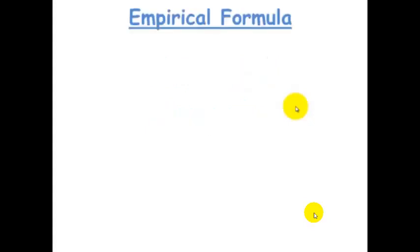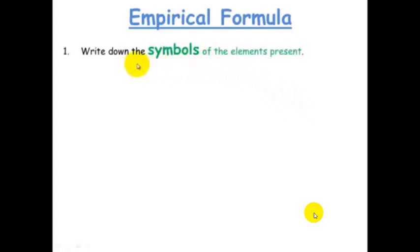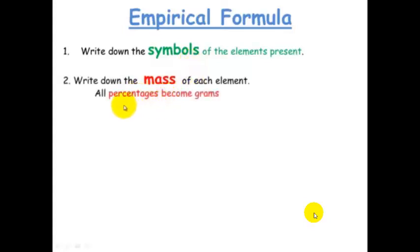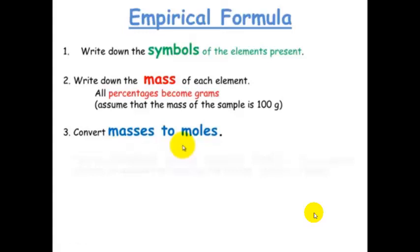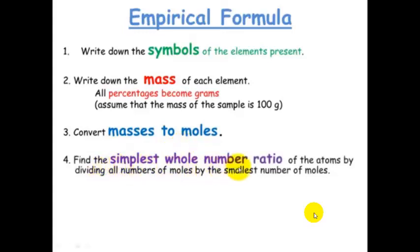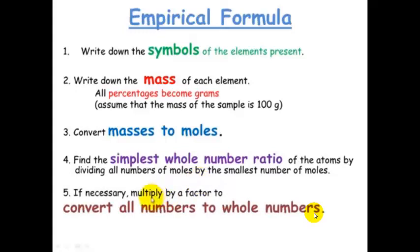There are a few steps to deriving the empirical formula. Step one: write down the symbols of the elements present. Step two: write down the mass of each element — if given percentages, just convert them to grams, assuming the sample is 100 grams. Step three: convert masses to moles. Step four: find the simplest whole number ratio by dividing all mole values by the smallest. Step five: if necessary, convert to whole numbers.